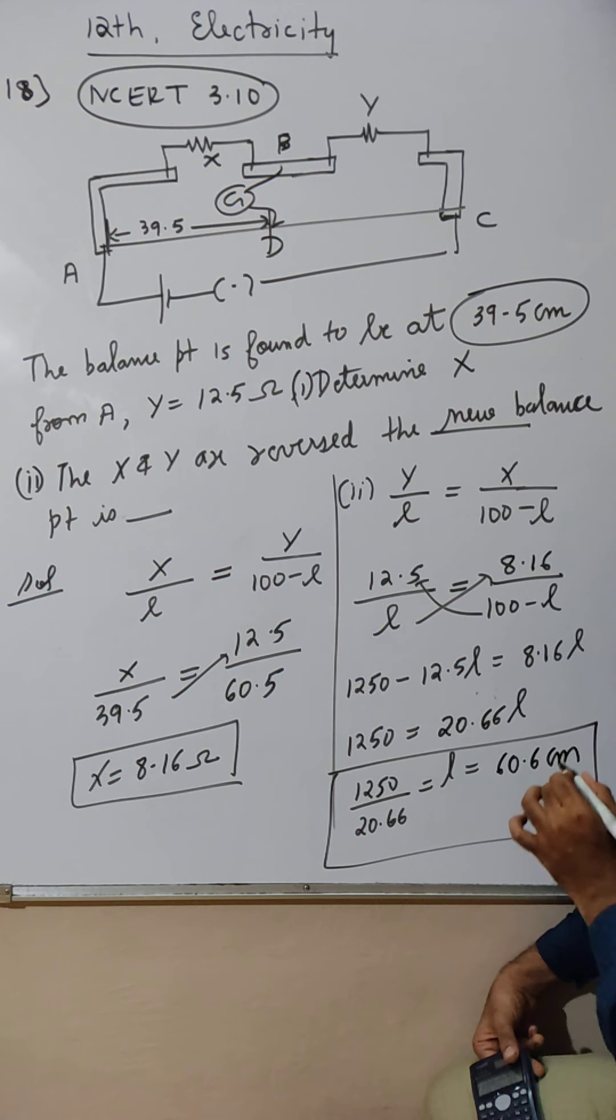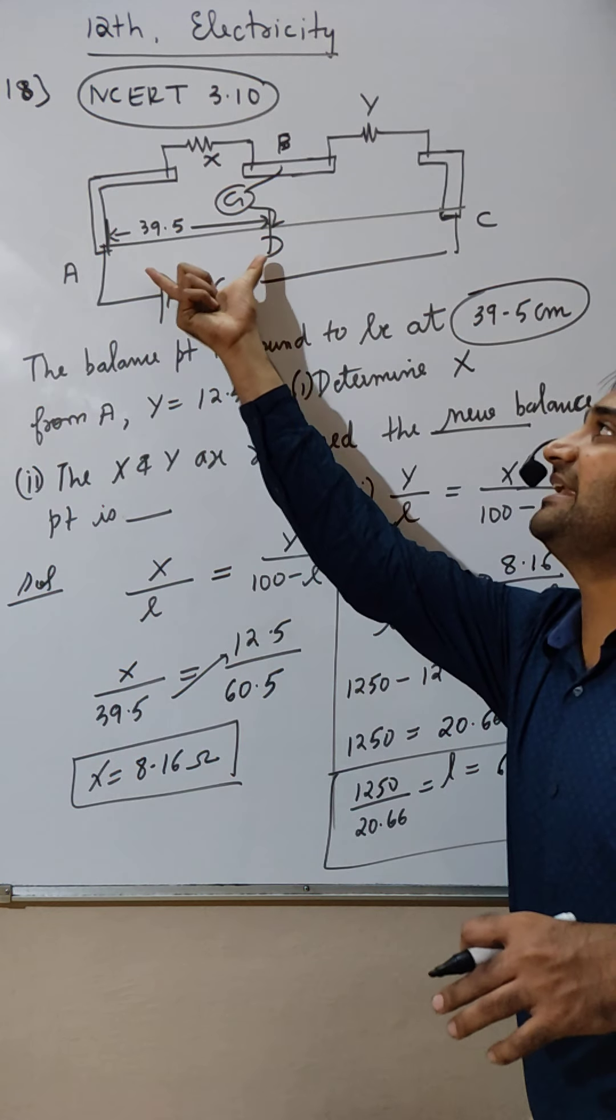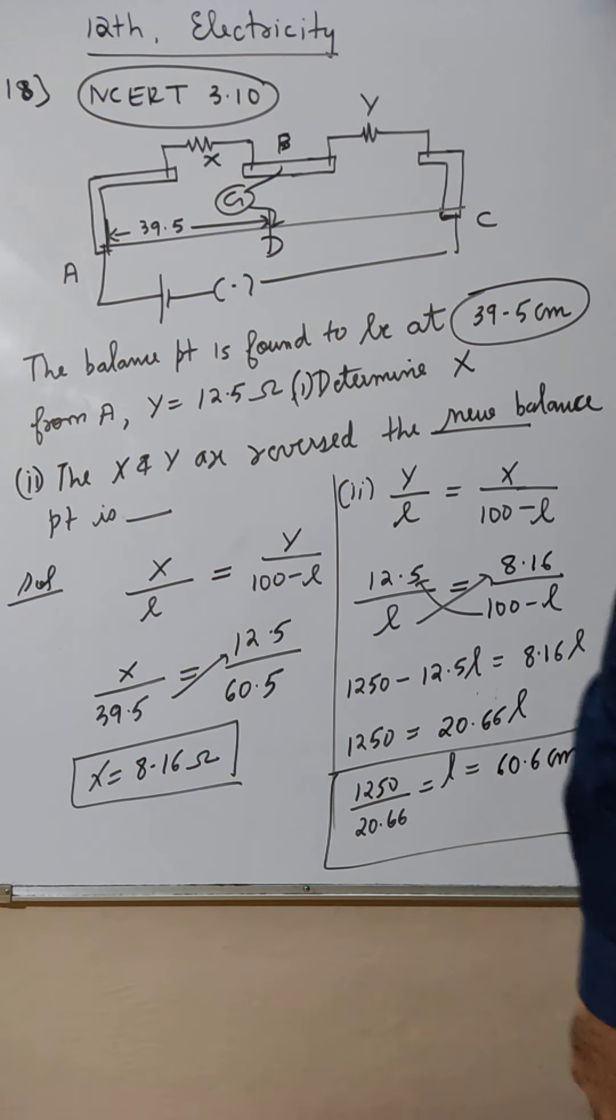60.6 centimeter is the new balance bridge length. Did everyone get it? Is it correct? Did everyone get clarity on the subject? Now everyone should understand what a meter bridge is, what a balance point is, how to calculate it, and what kinds of problems arise.